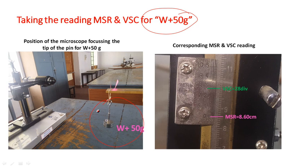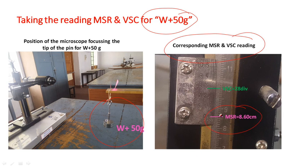For the new weight, you have to take the new MSR and VSE readings, because by adding the weight there will be displacement in the cantilever due to depression. In the right-hand side picture, you can see the illustrative readings: the MSR reading is 8.60 centimeters and the VSE is equal to 28 divisions.